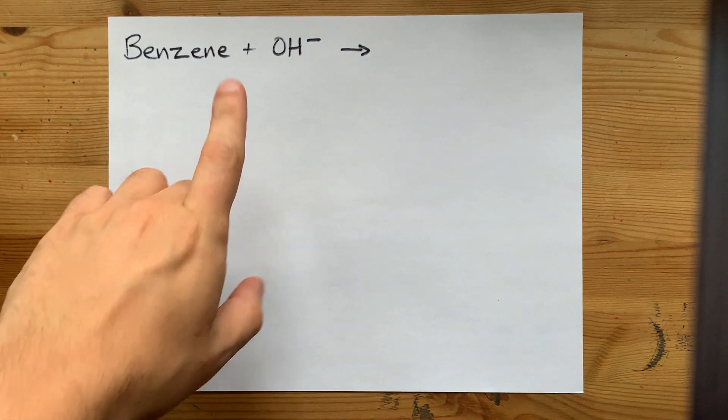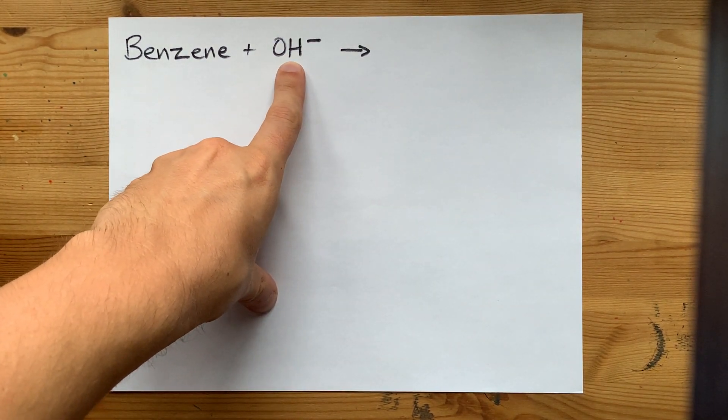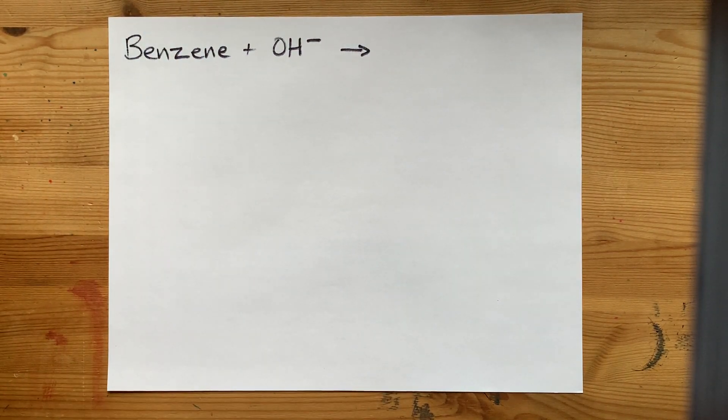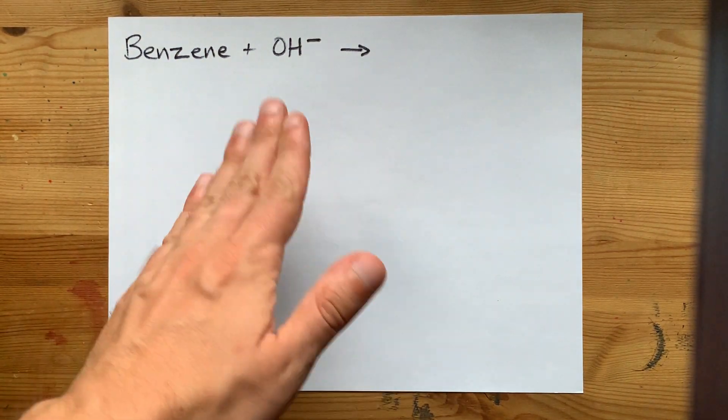Can benzene react with hydroxide ions, like from sodium hydroxide, lithium hydroxide, etc.? The answer is no.